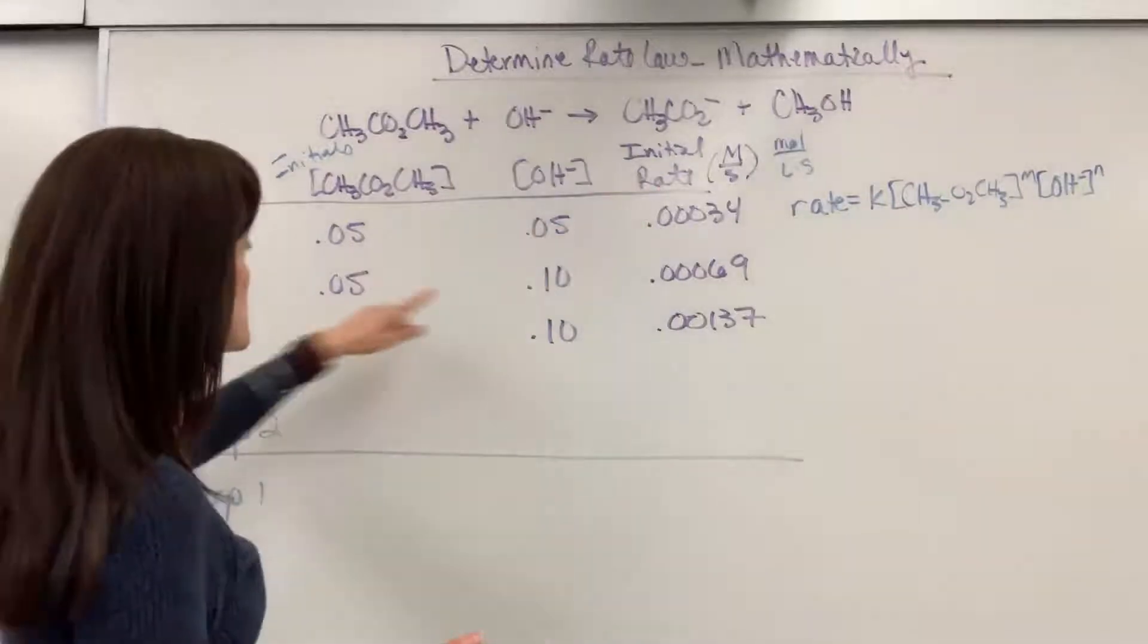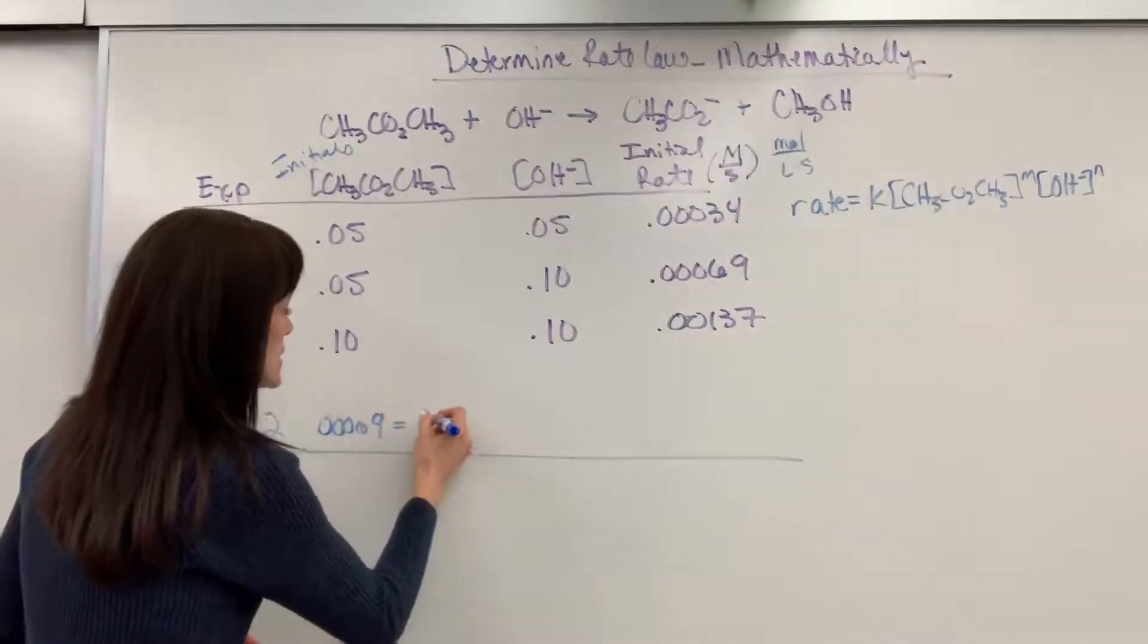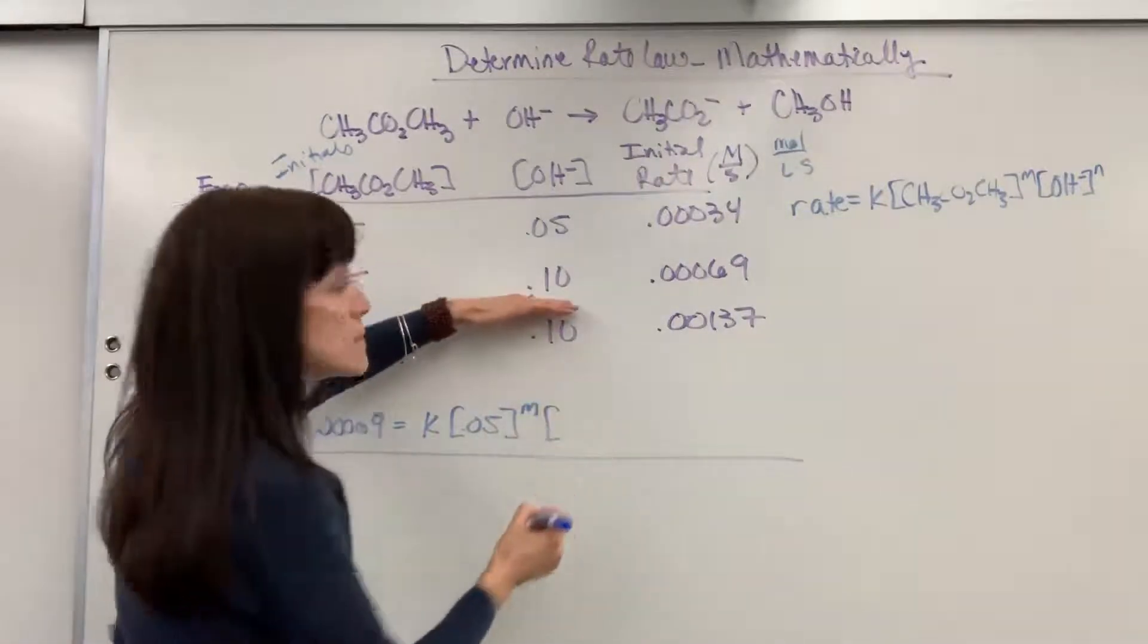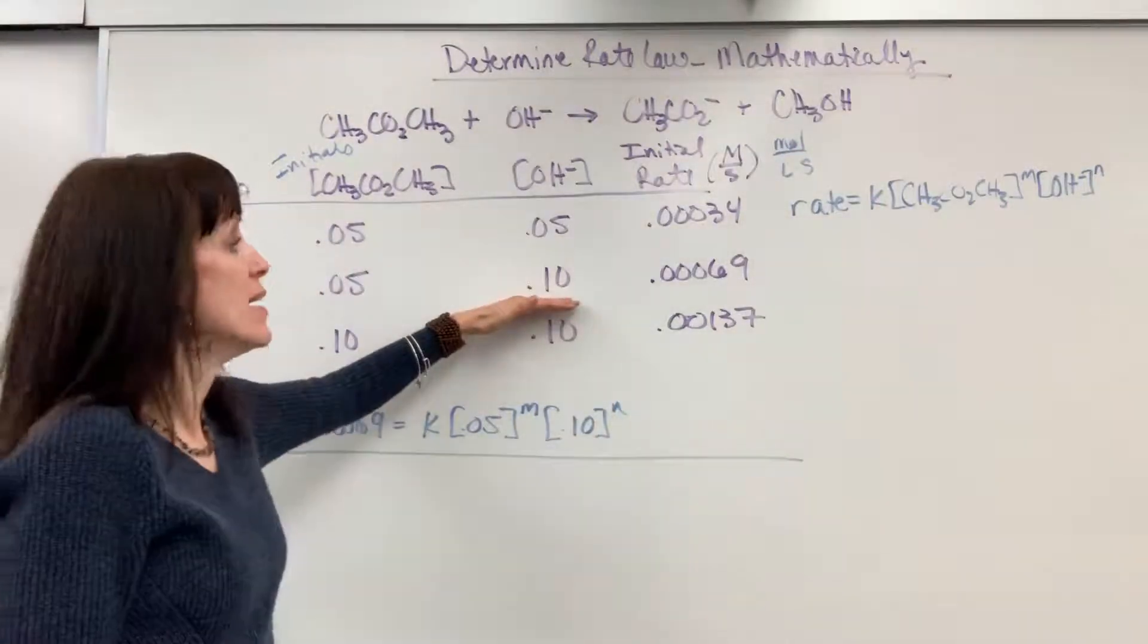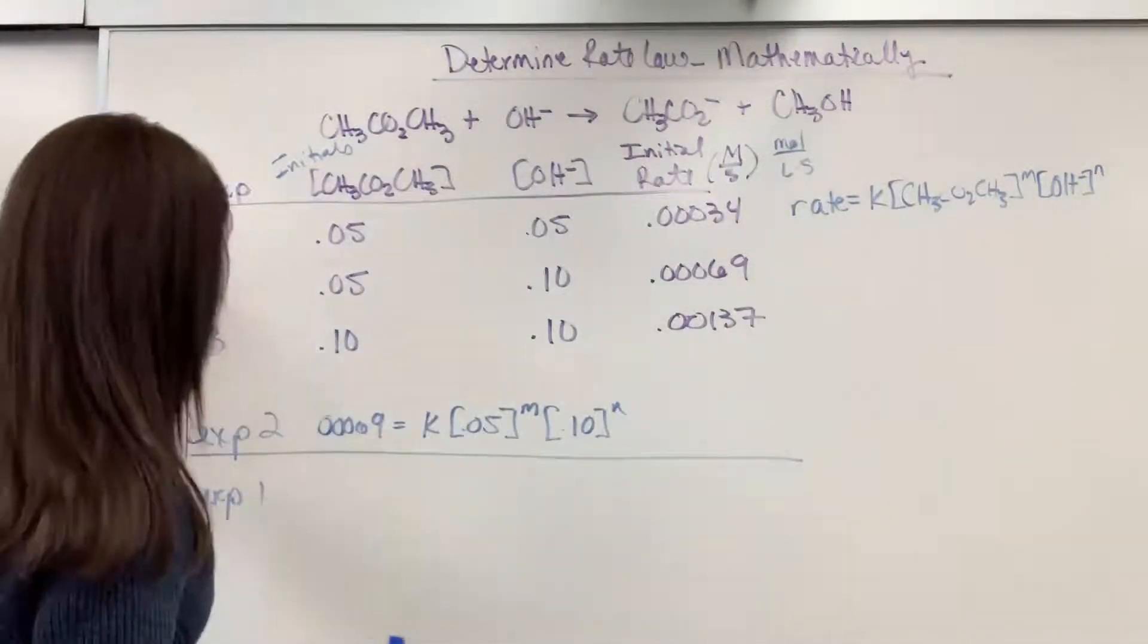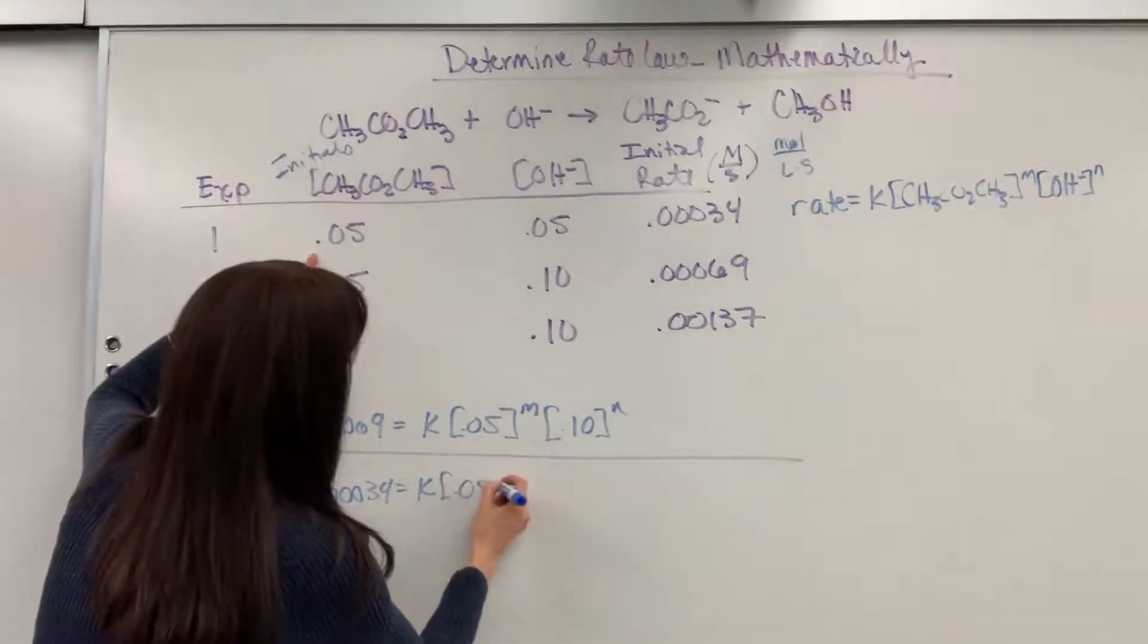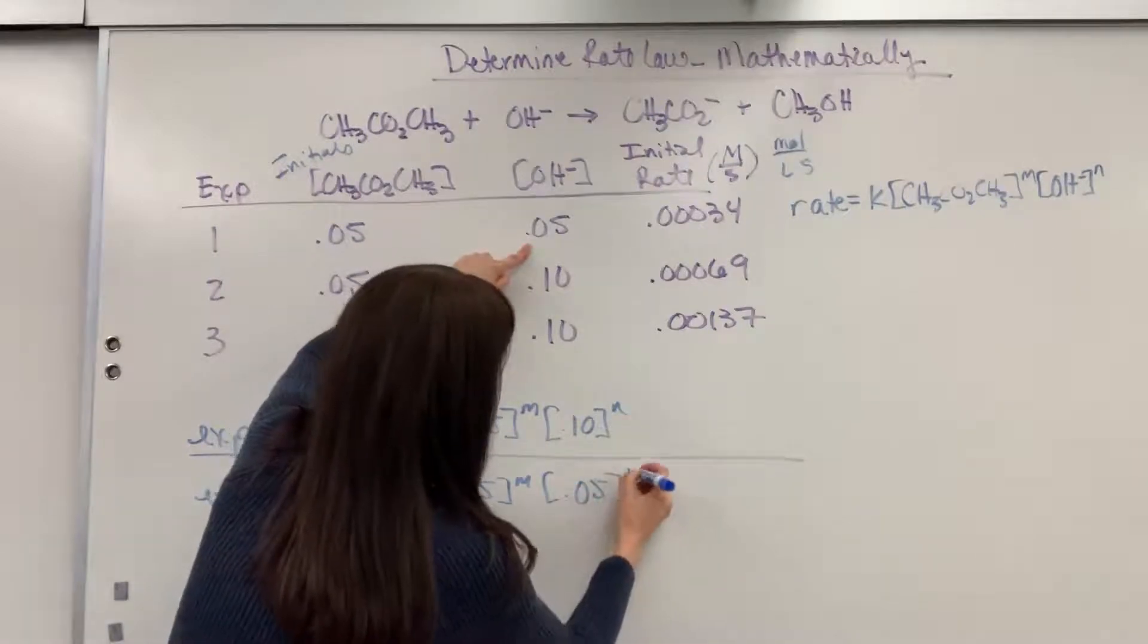Now, I'm just going to plug all of my information into this rate law. So experiment two, the rate is .00069 equals K times the concentration of experiment two, .05 raised to the M times concentration of the hydroxide, .10 raised to the N. Great. Now, I'm going to take experiment one, I'm going to plug that into the rate law. So the rate for experiment one is .00034 equals K times the concentration of .01 raised to the M times the concentration of .05 raised to the N.